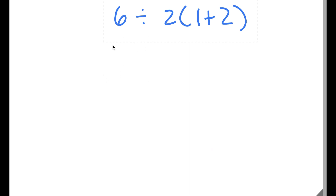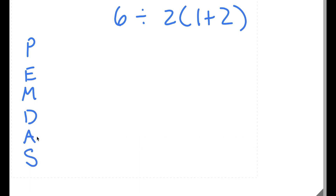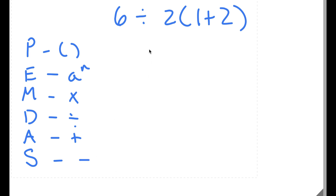In this problem, I have 6 divided by 2 times 1 plus 2. This is actually a very simple algebraic problem that many people get wrong. To solve this, I'm going to use PEMDAS: P for parentheses, E for exponents, M for multiplication, D for division, A for addition, and S for subtraction. We start by solving what's in parentheses first. 1 plus 2 equals 3, so now I have 6 divided by 2 times 3.